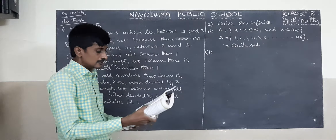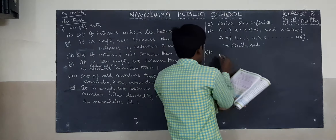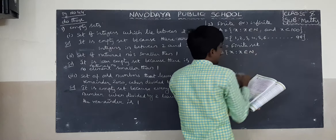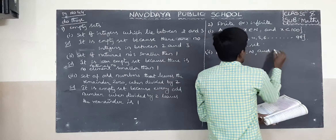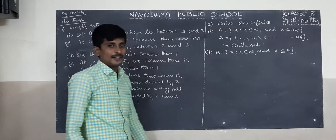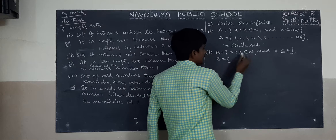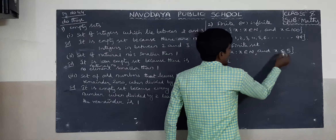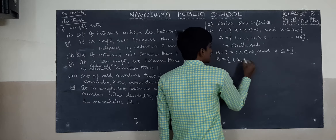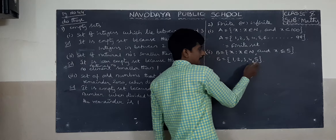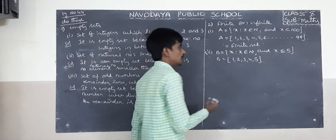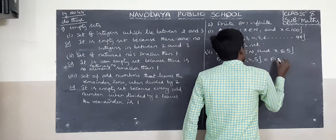Second one: B equals the set of x such that x belongs to natural numbers and x is less than or equal to 5. It is also a finite set because x is a natural number and x is less than or equal to 5. So the elements are 1, 2, 3, 4, 5 — only 5 elements. So it is also a finite set.